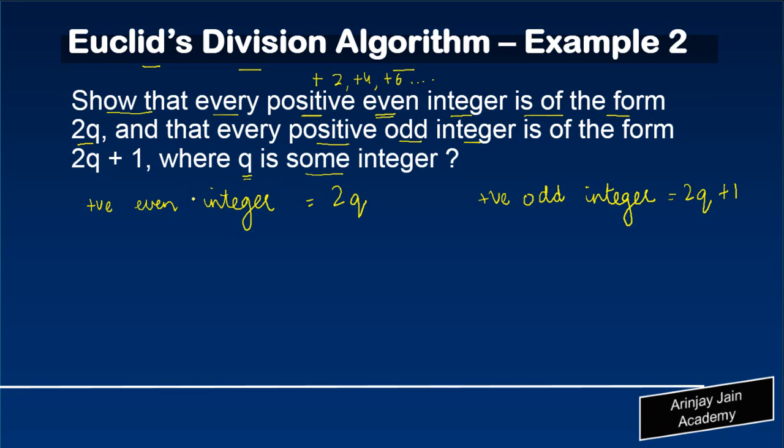Now, if you recall, by Euclid's division lemma, what we learned was that a = bq + r.